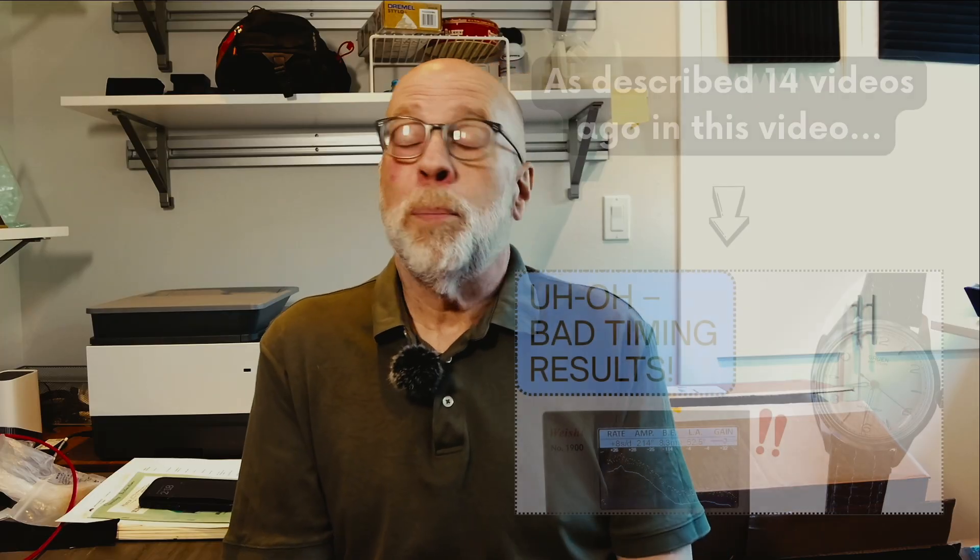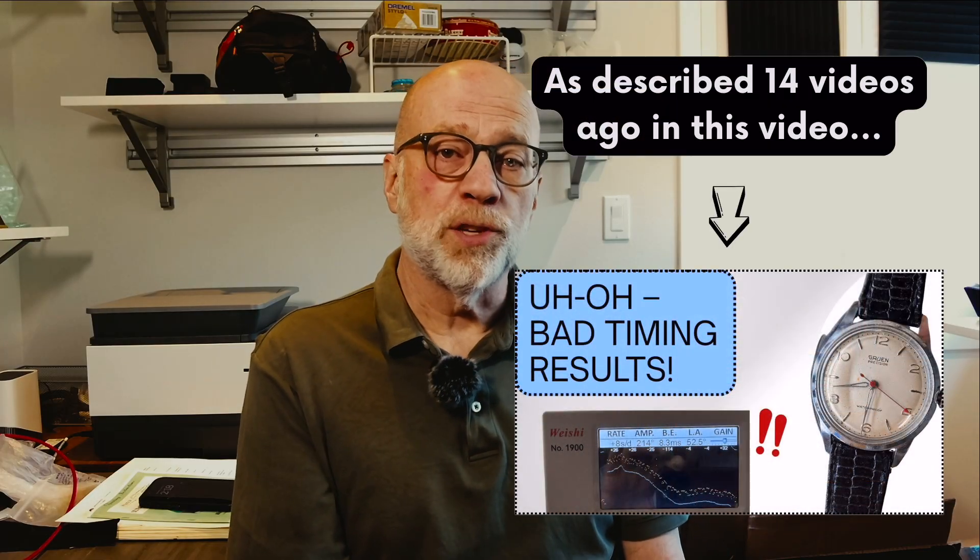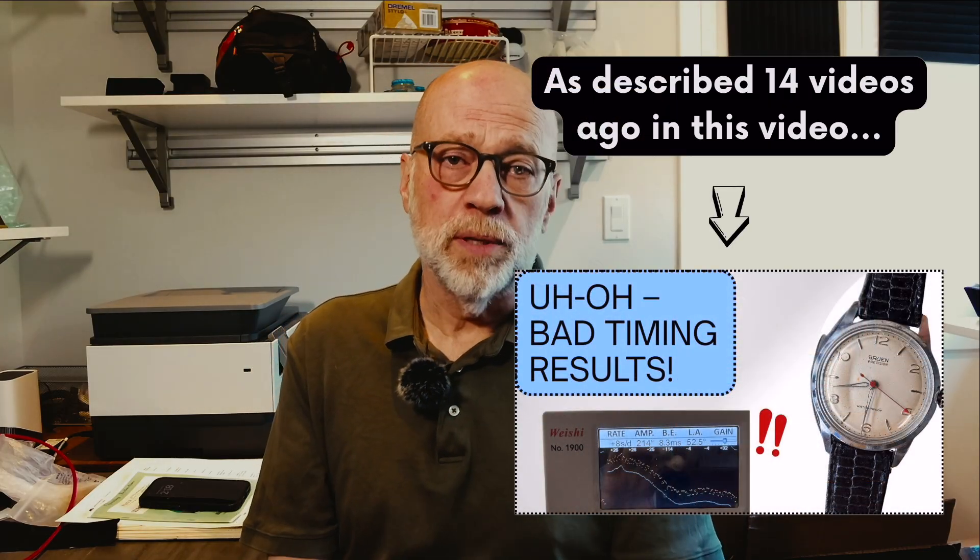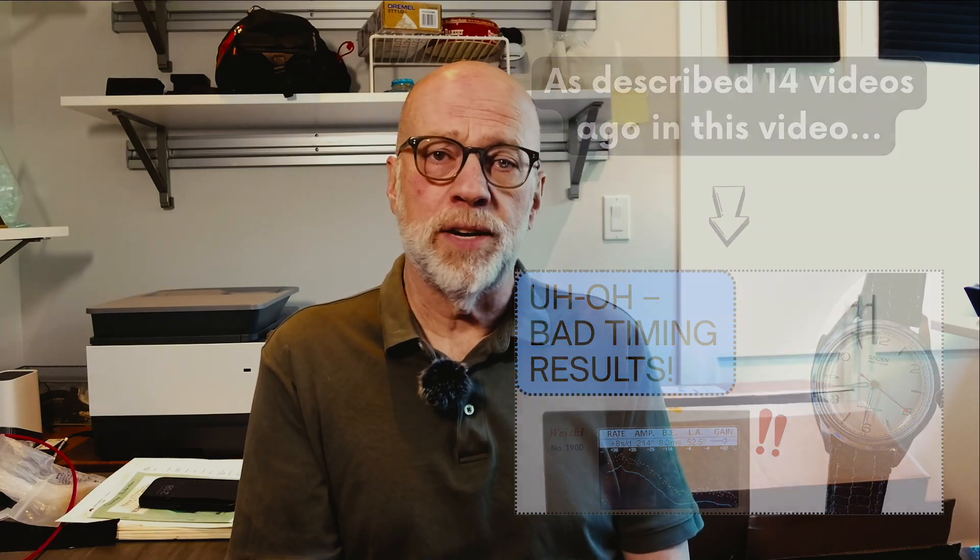Continuing from the last video about my Gruen watch project, I'm now hunting for a power loss that caused a severe amplitude problem in the movement, which is a Gruen 510 RSS movement dating from 1959, 1955, somewhere around there.